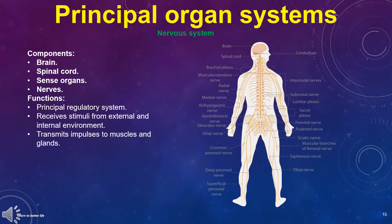The nervous system components are the brain, spinal cord, sense organs, and nerves. Its functions are: it is the principal regulatory system; receives stimuli from the external and internal environment; and transmits impulses to muscles and glands.